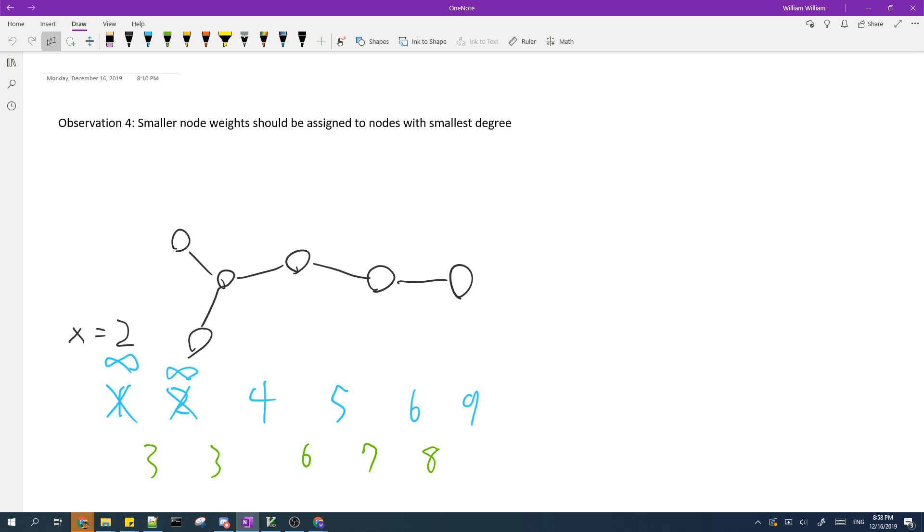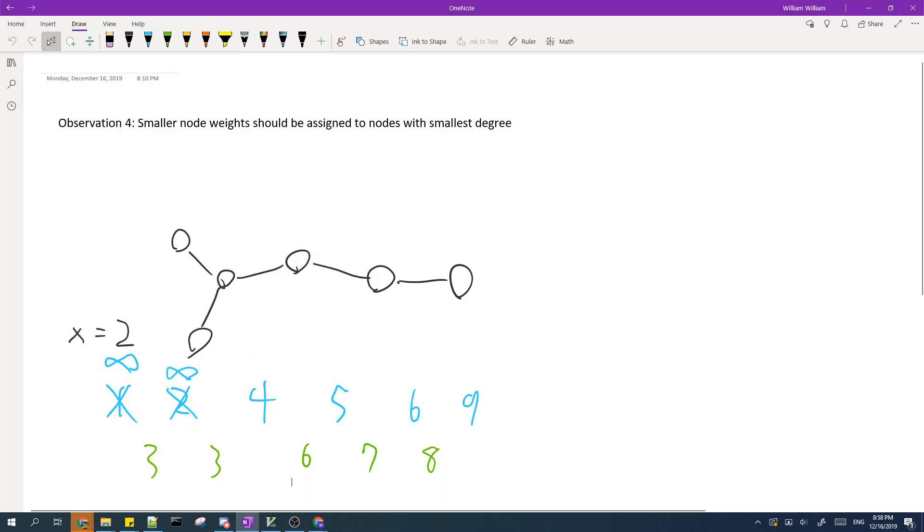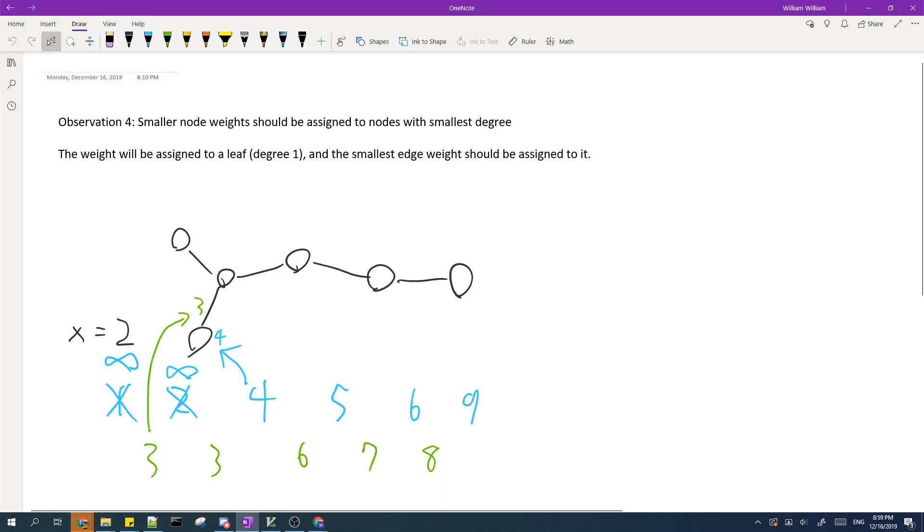And now we'll consider placing the node weights onto the nodes. For small node weights, it makes sense to place them onto nodes with a smaller degree so that this condition is less likely to be violated. So what we do is start from the smallest node weights and we put them on a leaf because a leaf only has a degree of 1. And then we also pair it with the smallest edge weight and set that as the edge adjacent to the leaf.